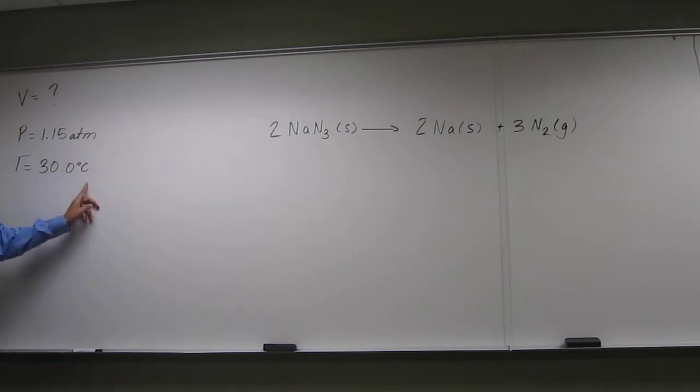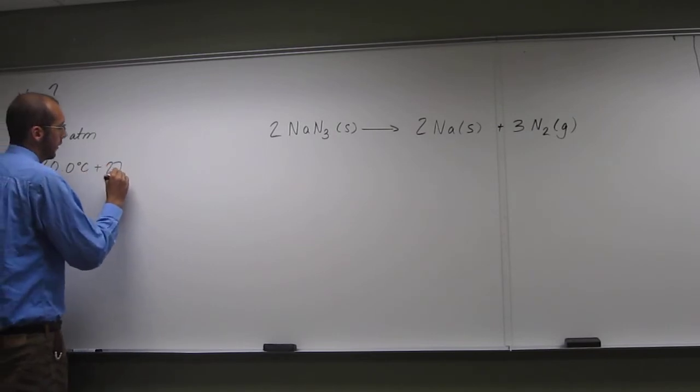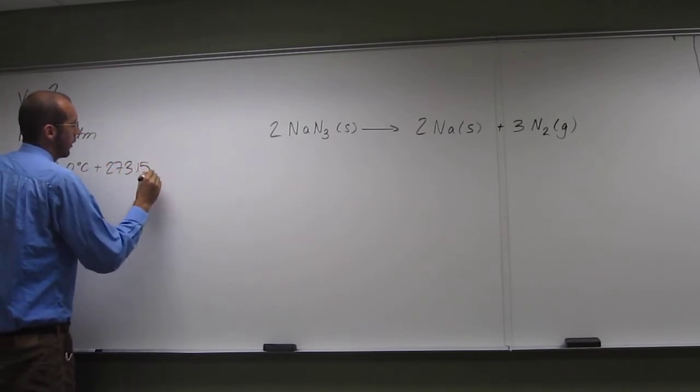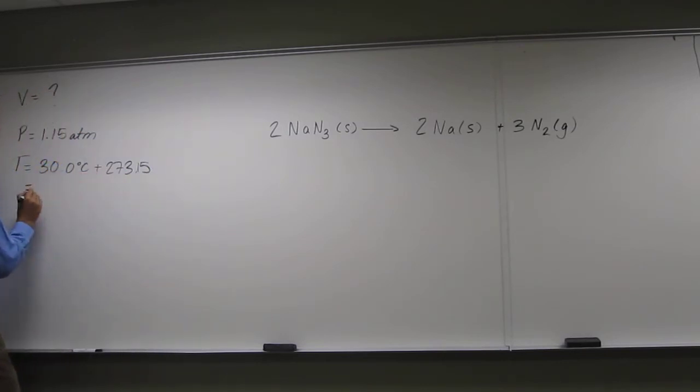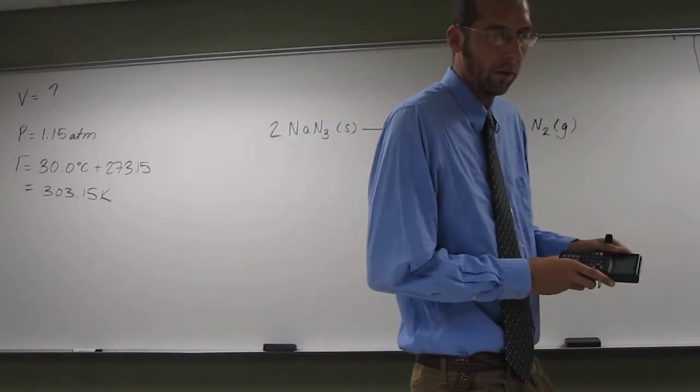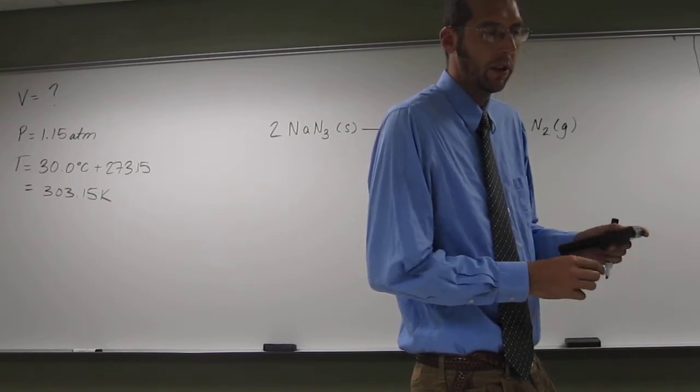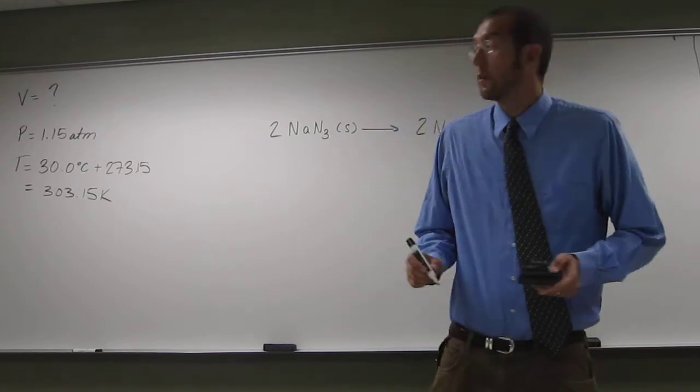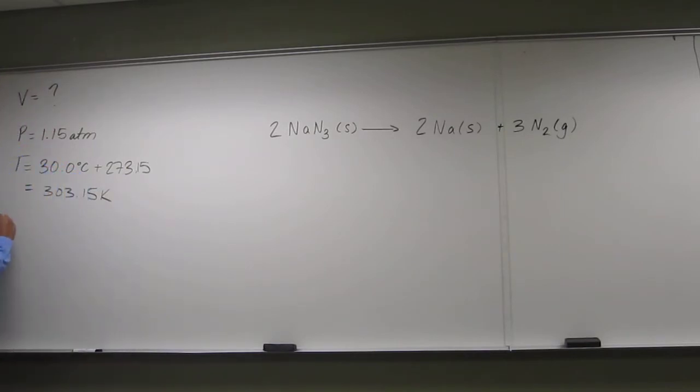And 30.0 degrees Celsius. So of course, remember, we're going to have to change that to kelvin. So when we do that, 273.15, that's going to equal 303.15 kelvin. Respectively, would you expect to be produced by the decomposition of 45 grams of sodium azide? So it gives you the mass of sodium azide, 45.0 grams.